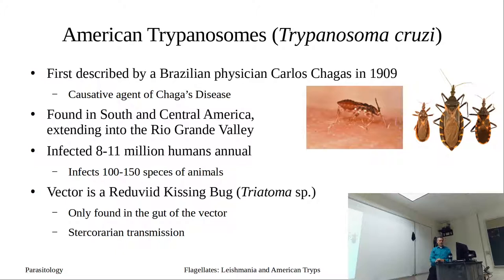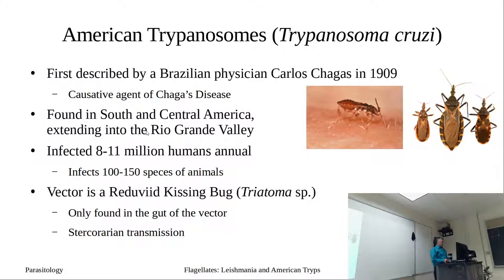This parasite infects 8 to 11 million humans annually and infects 100 to 150 different species of animals — making it hard to control, as animals serve as reservoir hosts. Since T. cruzi is only found in the gut of the vector — not the salivary gland — it develops via posterior station development, exhibiting stercorarian transmission: the bite-and-crap method. When the bug bites, it expands and defecates; the infective stages in those contents give the parasite a way to infect humans. We'll start with the American trypanosomes' life cycle, which is different, and we'll probably get into Leishmania on Friday.